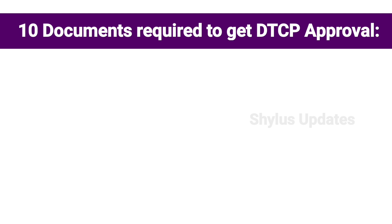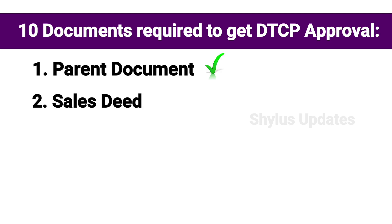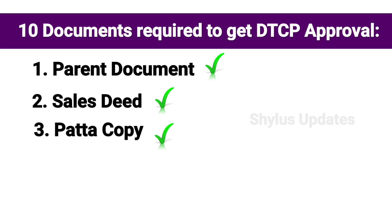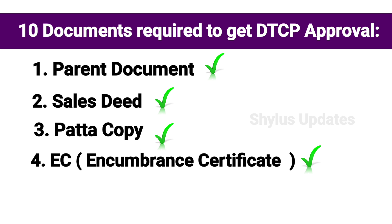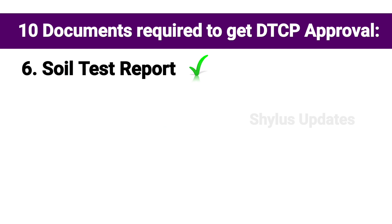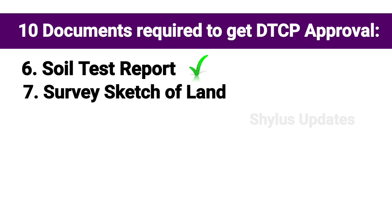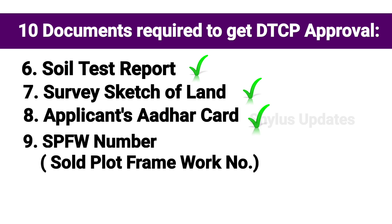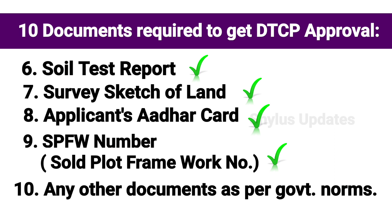Now let's see what documents are needed for DTCP approval. First is the parent document. Second is the sales deed. Third is Patta copy. Fourth is EC — Encumbrance Certificate — which you need to obtain from the year 2016. Fifth is NOC — No Objection Certificate — from the concerned authorities. Sixth is a soil test report. Seventh is a survey sketch of the land. Eighth is the applicant's Aadhar card. Ninth is the SPFW number — Sold Plot Framework Number — based on which you get the DTCP number for your site. Plus any other documents as per government norms. You can apply at the Panchayat office, municipality office, or corporation office.